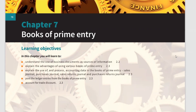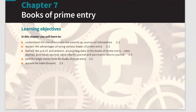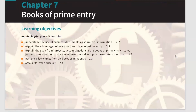The third point talks about posting ledger entries from the Books of Prime Entry. From these books — these journals — you put them into double entry records: debits and credits. We also account for trade discount, and how we calculate trade discount — we've already done this one.